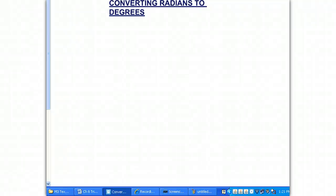Welcome again to the screencast on converting radians to degrees. If you remember from our previous screencast, we learned that 2π radians is equal to 360 degrees.